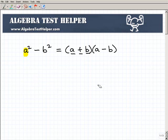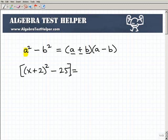Let's kind of make it more challenging. How about this: x plus 2 squared minus 25. What if you had something like this and you wanted to factor it? Well, could you do that? Is it a difference of two squares? If you look at it, it is.